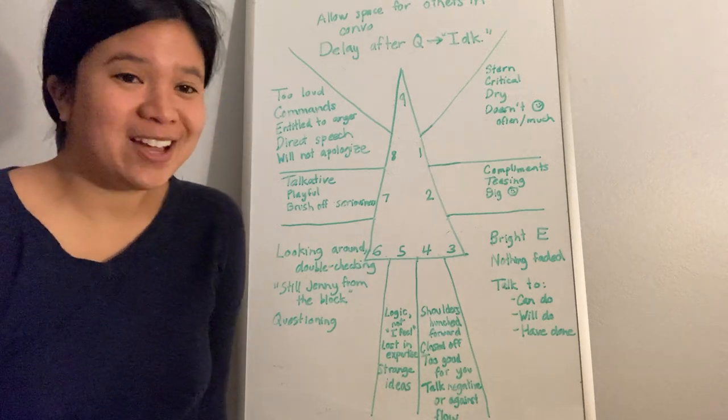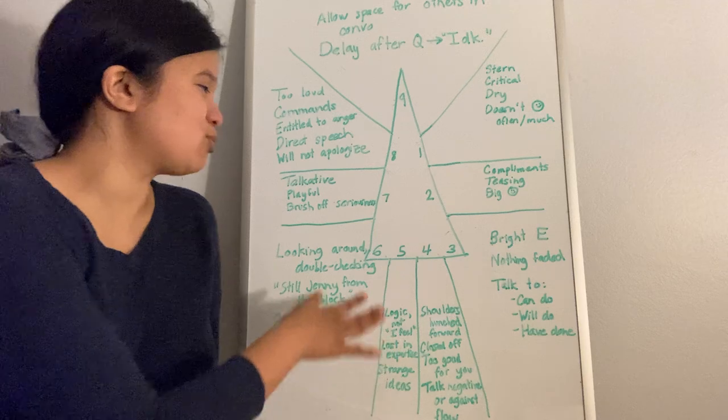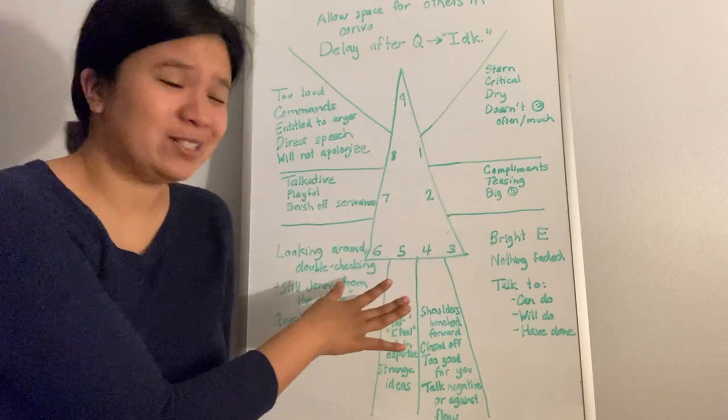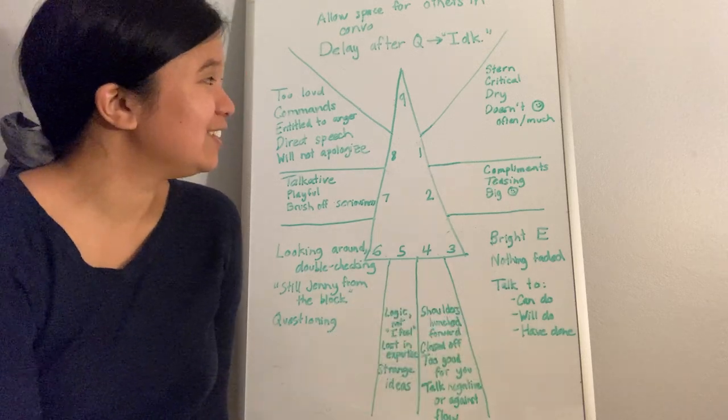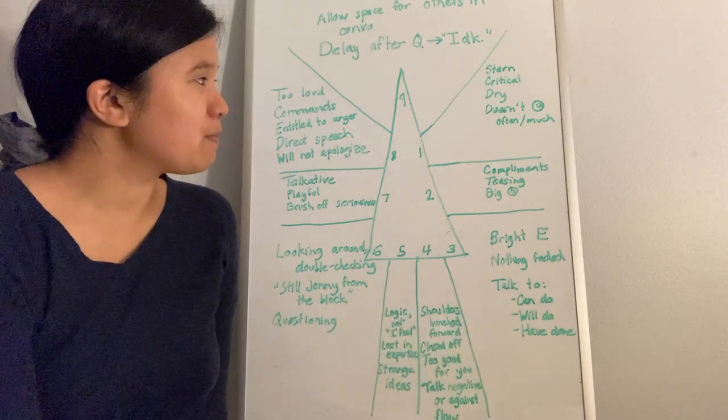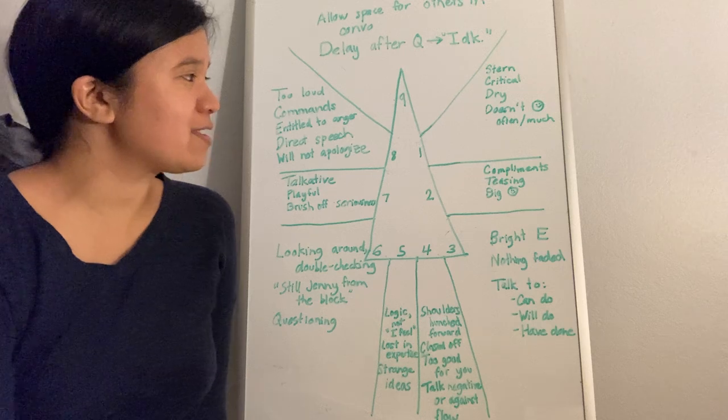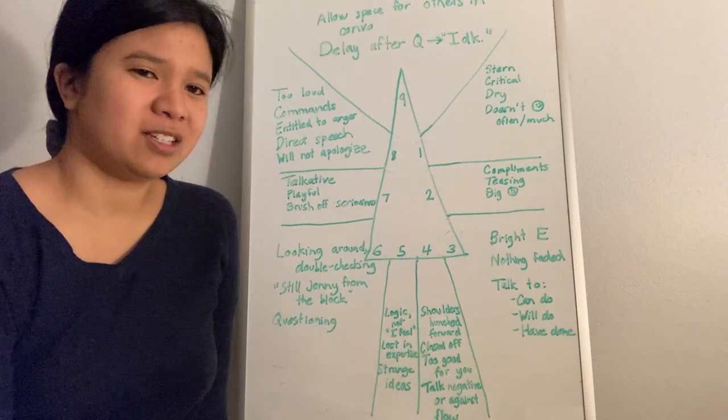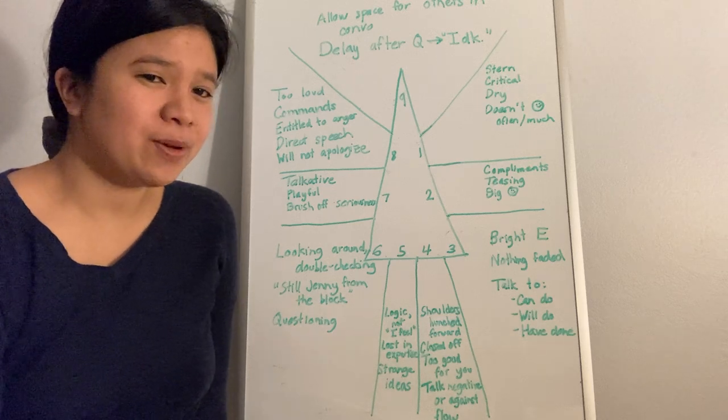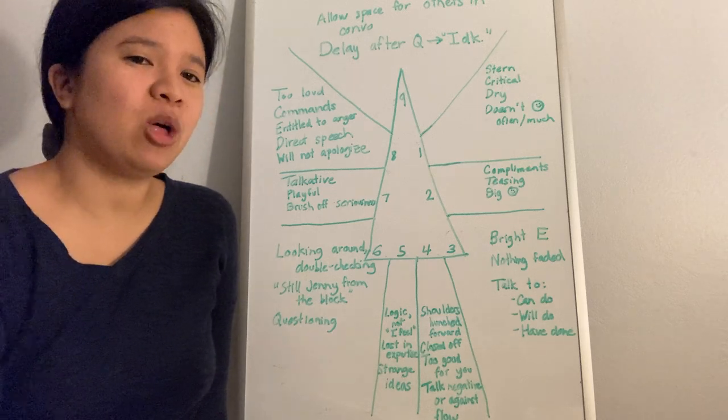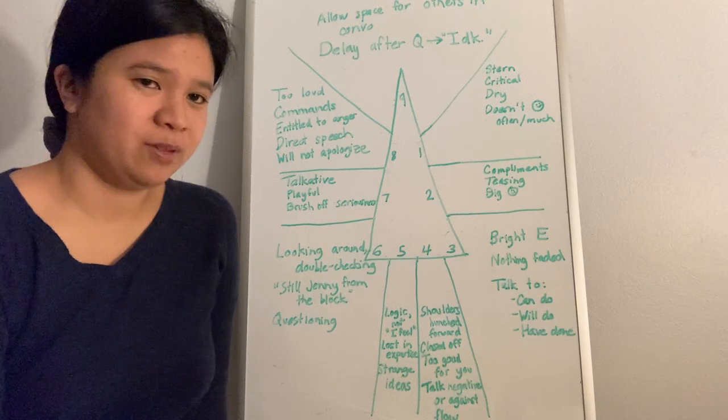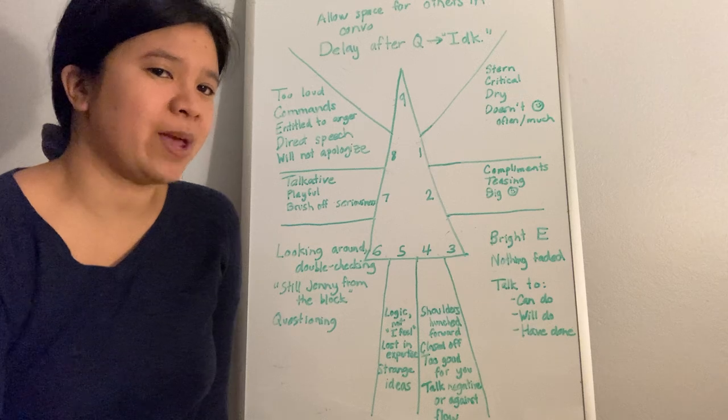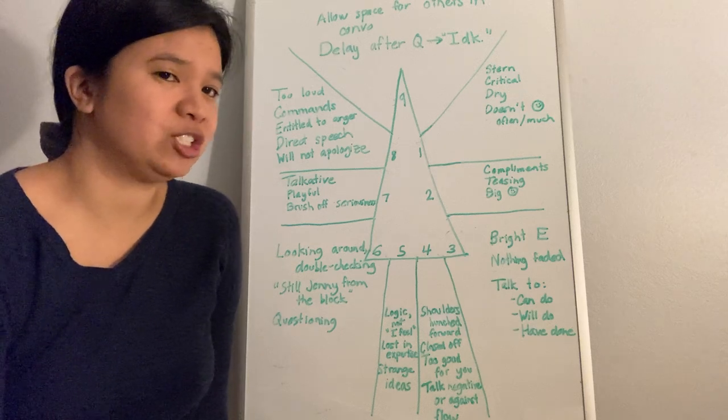I've simplified the Enneagram by making a triangle and just putting the numbers around in your typical clockwise fashion. Now I want to emphasize that these signals are not indicators of your type necessarily, but they may help you determine your type. The best indicator of finding your type is examining and comparing the core fears of each type.